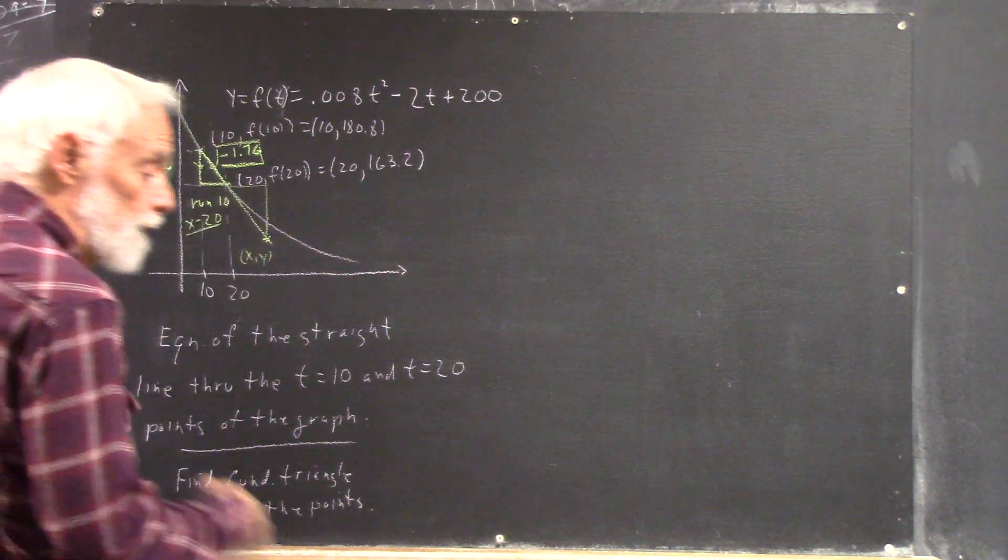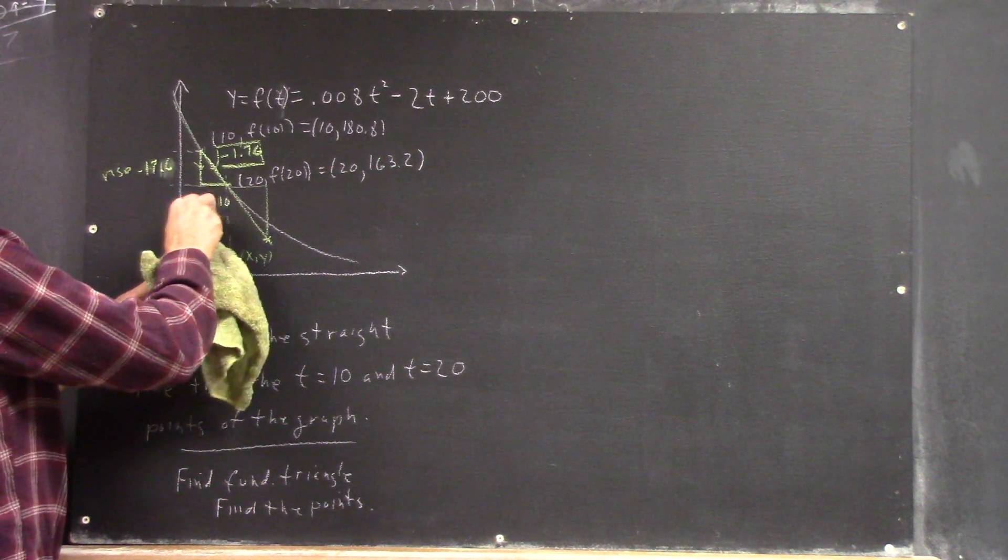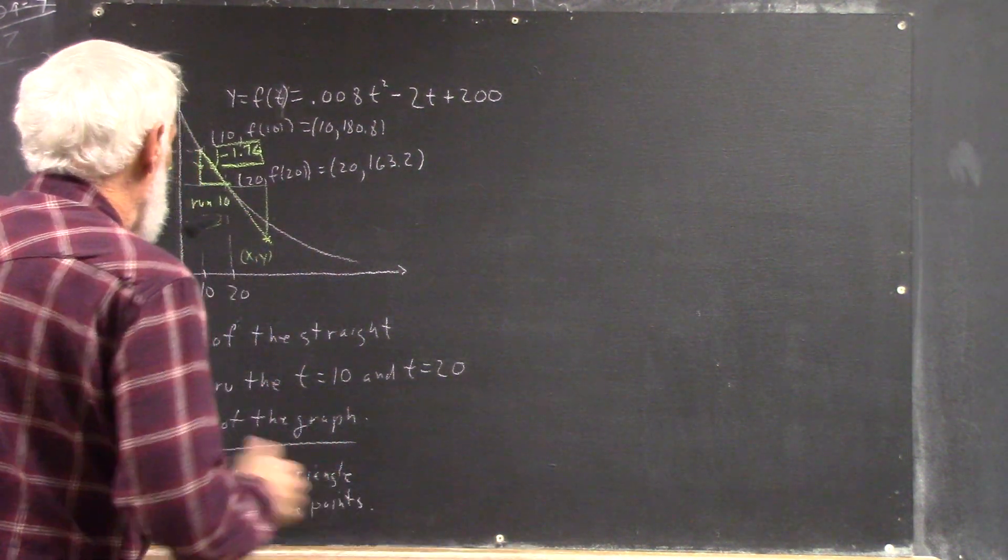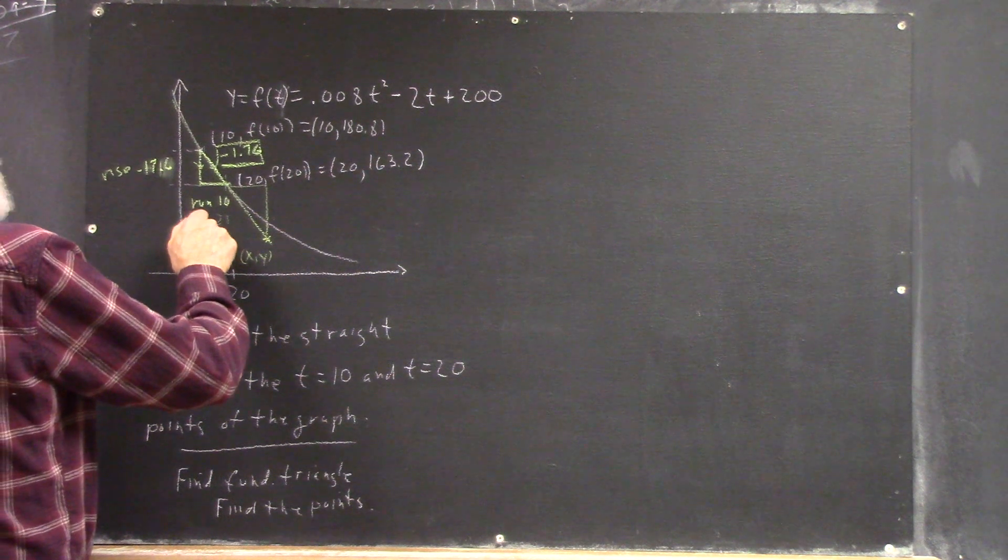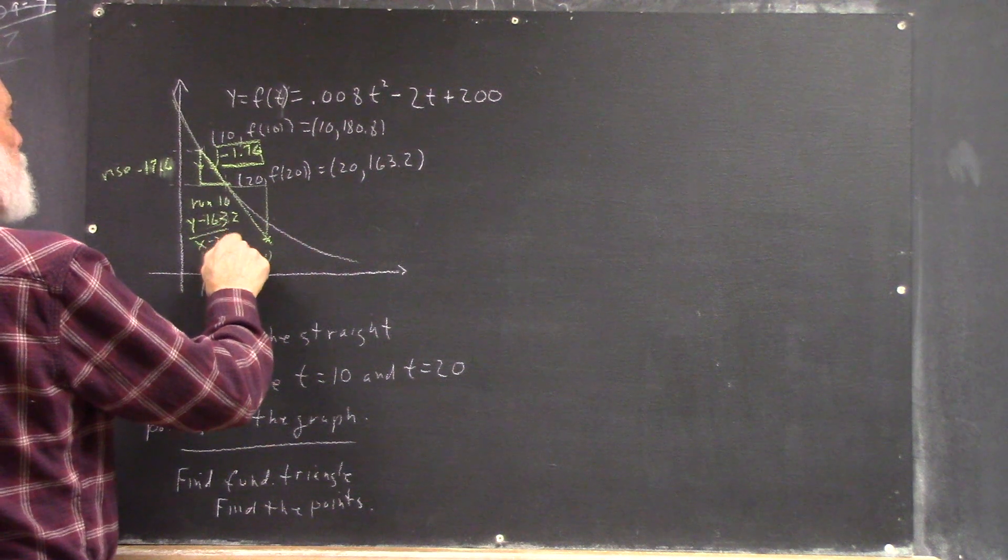The slope is going to be... it's going to have x minus 20. That's going to be the denominator. (y - 163.2) / (x - 20).